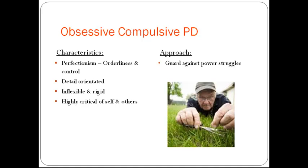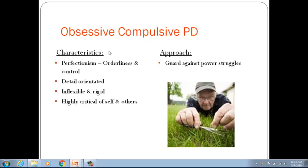For OCPD patients, guard against power struggles — the patient's need for control is high. Common defense mechanisms include intellectualization, rationalization, reaction formation, isolation, and undoing. Therapies may include supportive therapy and SSRIs for obsessive thinking and depression.